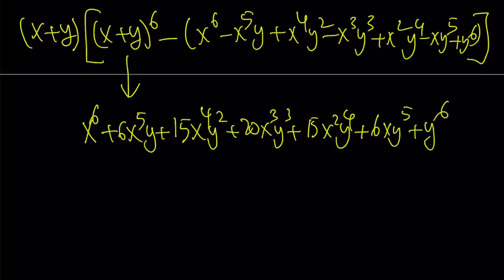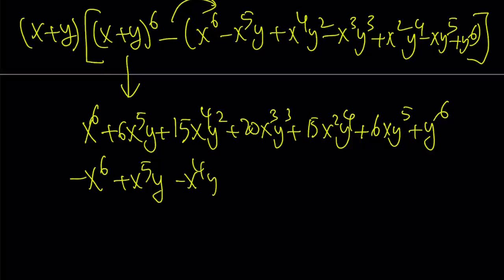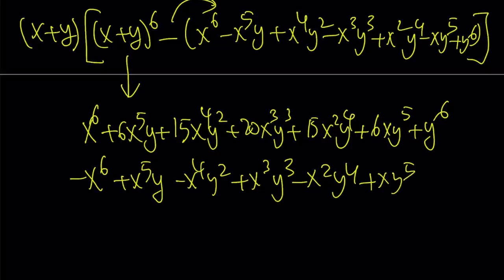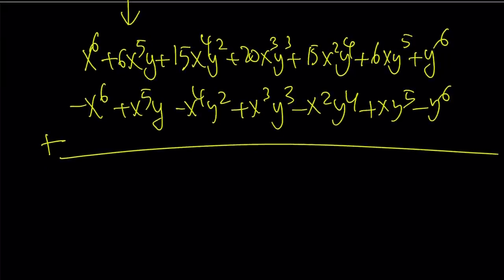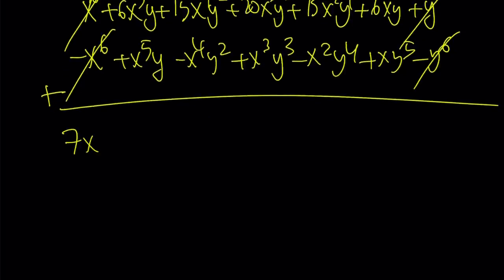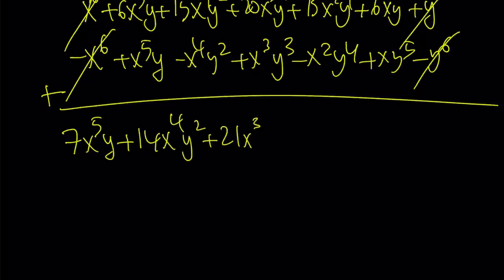From this we're going to subtract something, so let's negate everything so we can just add them. We get negative x to the sixth plus x to the fifth y minus x to the fourth y squared plus x cubed y cubed minus x squared y to the fourth plus x y to the fifth minus y to the sixth. Since we negated everything, we can add these up, and some terms cancel. We end up with like terms: seven x to the fifth y plus 14 x to the fourth y squared plus 21 x cubed y cubed plus 14 x squared y to the fourth plus seven x y to the fifth.